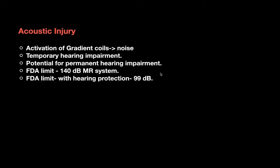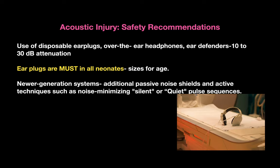The FDA limit for noise without hearing protection is up to 140 decibels, and with hearing protection up to 99 decibels. Safety recommendations for acoustic injury include disposable earplugs, over-the-ear headphones, and ear defenders which can attenuate 10 to 30 decibels of sound. Earplugs are must for all neonates, with different sizes available. Additional passive noise shielding and active techniques such as noise-minimizing or silent pulse sequences can also be used.